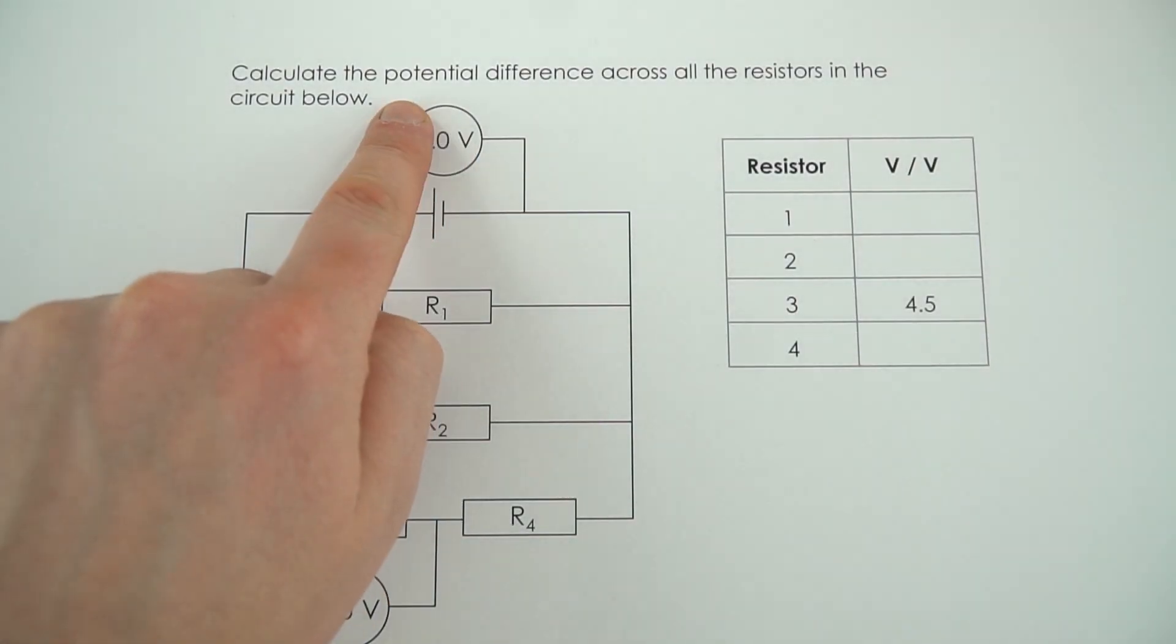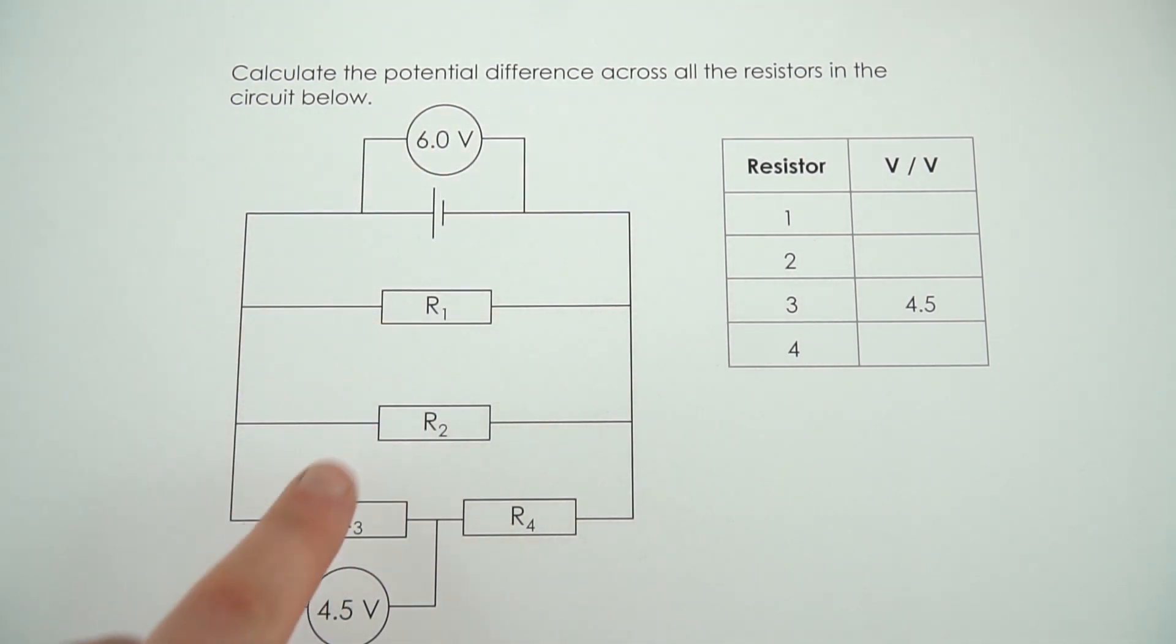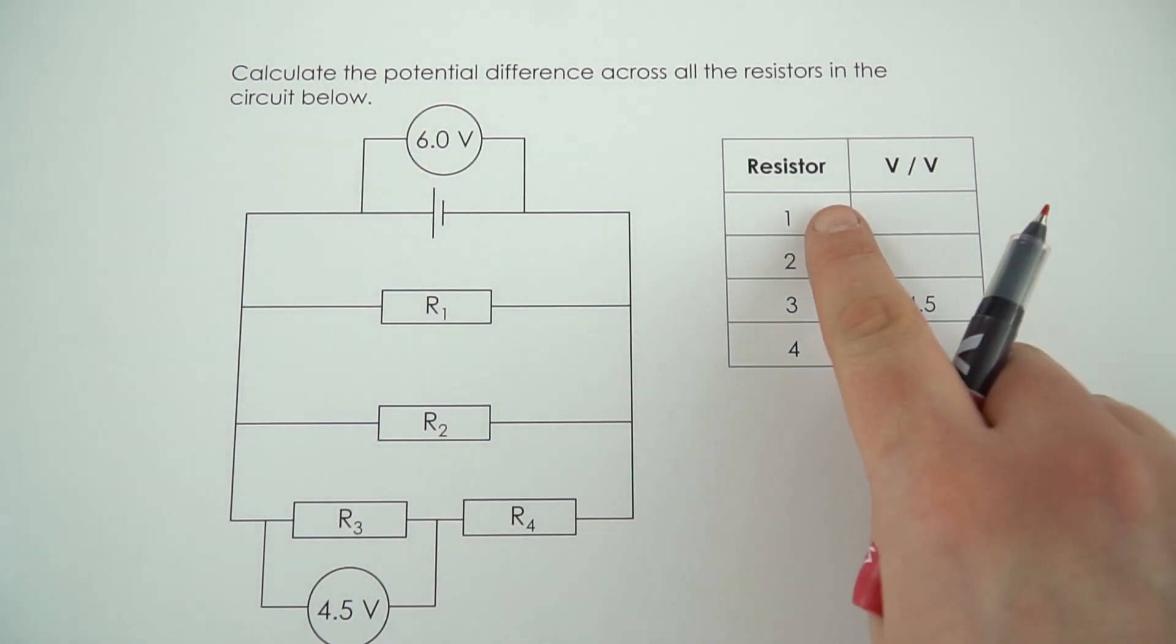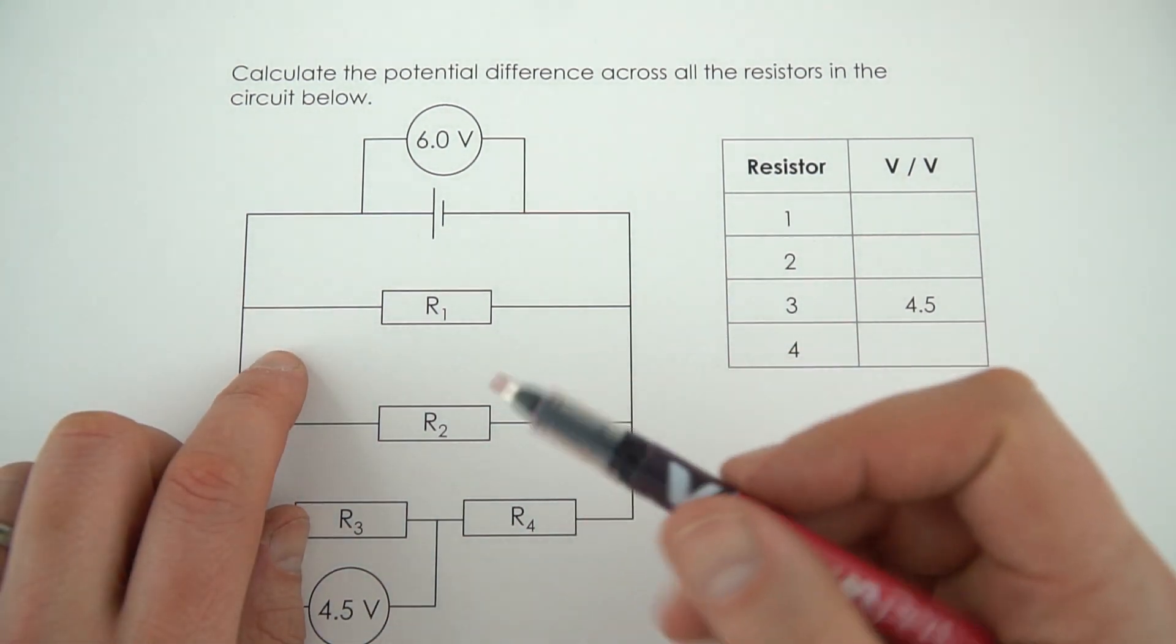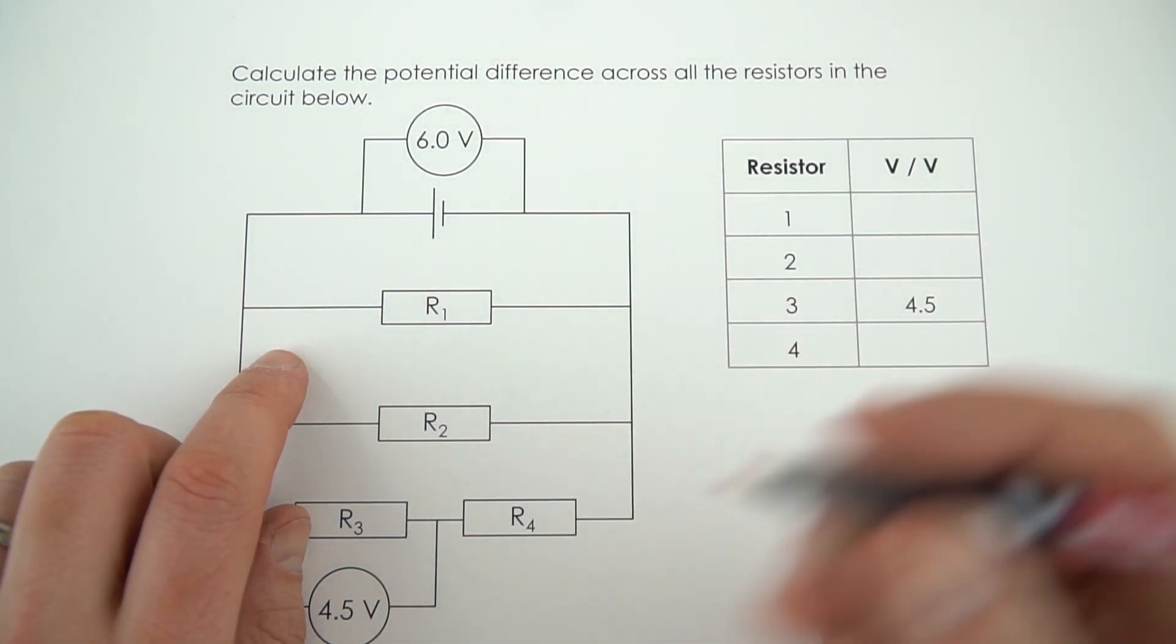Now here we need to look at the potential difference across all of the resistors in the circuit below. And it says from the table here that resistor 3 has a potential difference of 4.5 volts across it. Now the way we're going to do this, I'm just going to mark onto my diagram any values of potential difference that I realize.